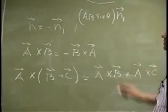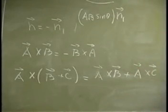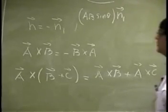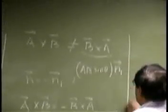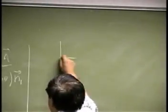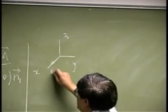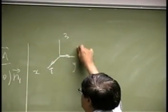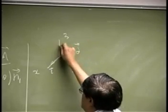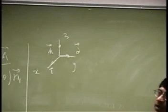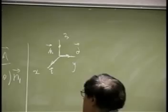These are the two rules you need to use when you work with a cross product. Now, if I define i, j, and k again, we have a vector going like this as i, a vector going this way as j, and a vector going this way as k. So we define those three unit vectors along x, y, z axis.